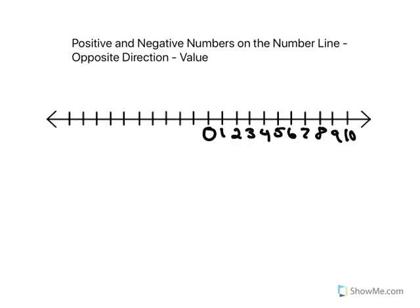However, what you may not remember is that the numbers to the left of zero are called negative numbers. The numbers to the right are positive numbers, and the numbers to the left are negative numbers. So this is negative 1, negative 2, negative 3, negative 4, negative 5, negative 6, negative 7, negative 8, negative 9, and negative 10.